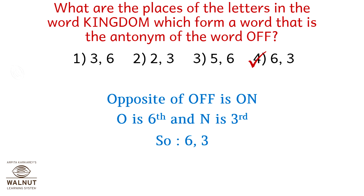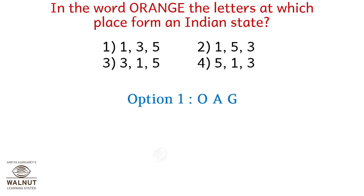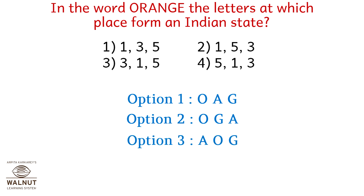In the word 'orange', the letters at which place form an Indian state? Option one is 1,3,5; option two is 1,5,3; option three is 3,1,5; option four is 5,1,3. Option four gives letters G, O, A — which spells Goa, an Indian state. So the answer is option four: 5, 1, and 3.